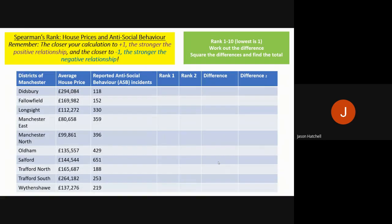Now for Spearman's rank calculation. Remember that in an exam most of the table is completed for you — you are always given the formula and just need to punch in numbers and use your calculator. Key rules: the closer your result to +1, the stronger the positive relationship between two datasets; the closer to −1, the stronger the negative relationship. In this example we are looking at districts of Manchester comparing average house price versus anti-social behaviour incidents. We rank lowest to highest — lowest value is rank 1, highest is rank 10 — then work out the difference between the two ranks and square it.